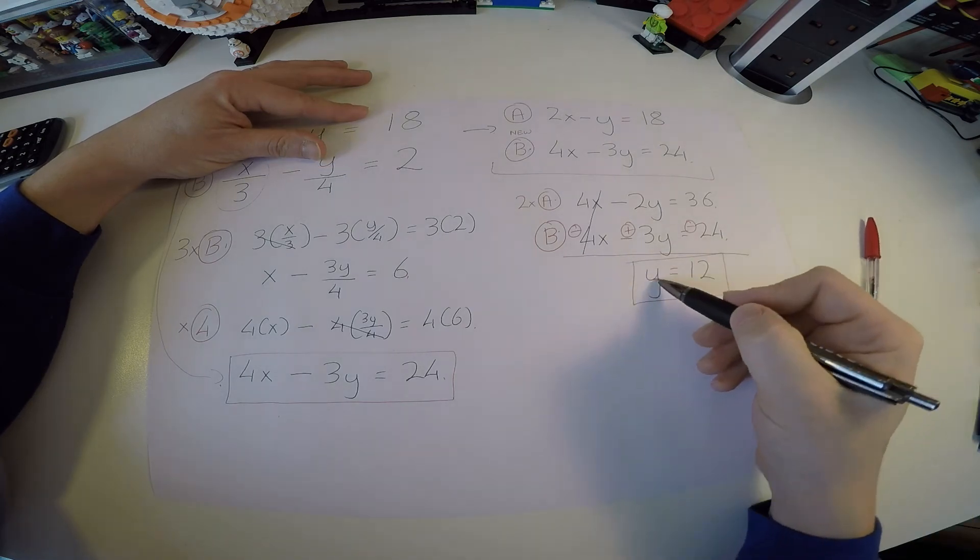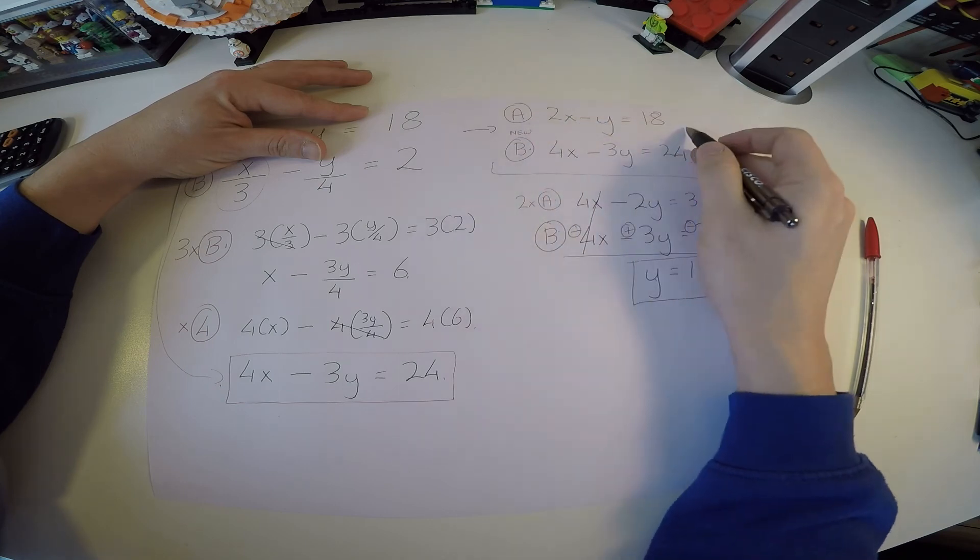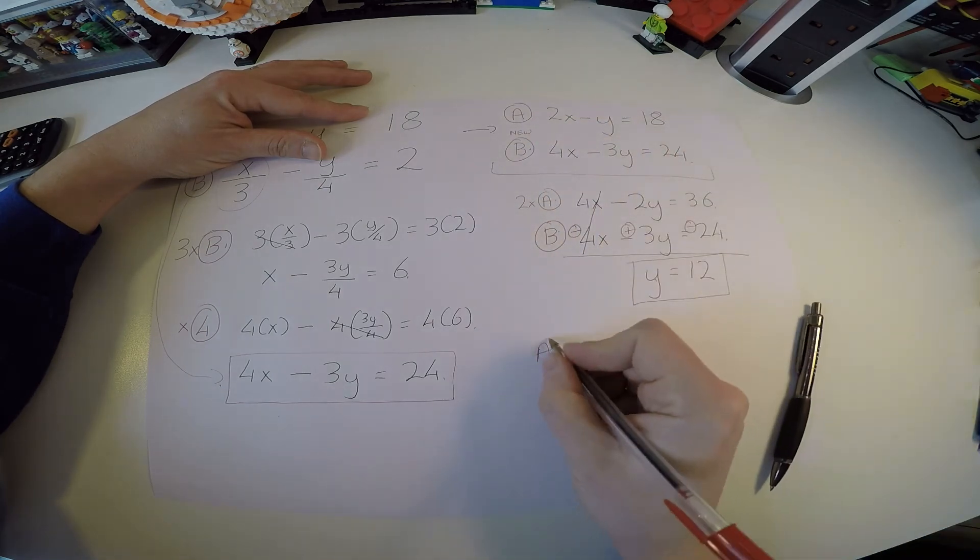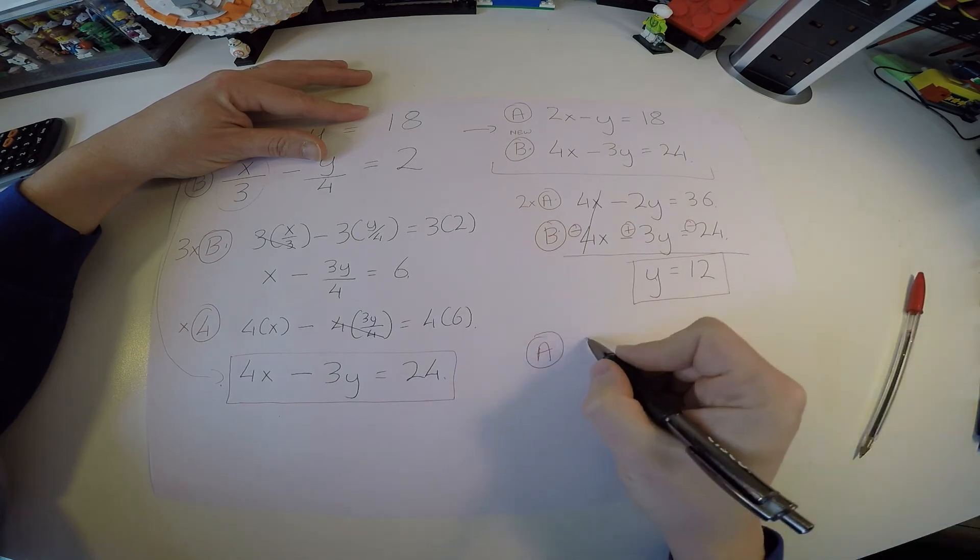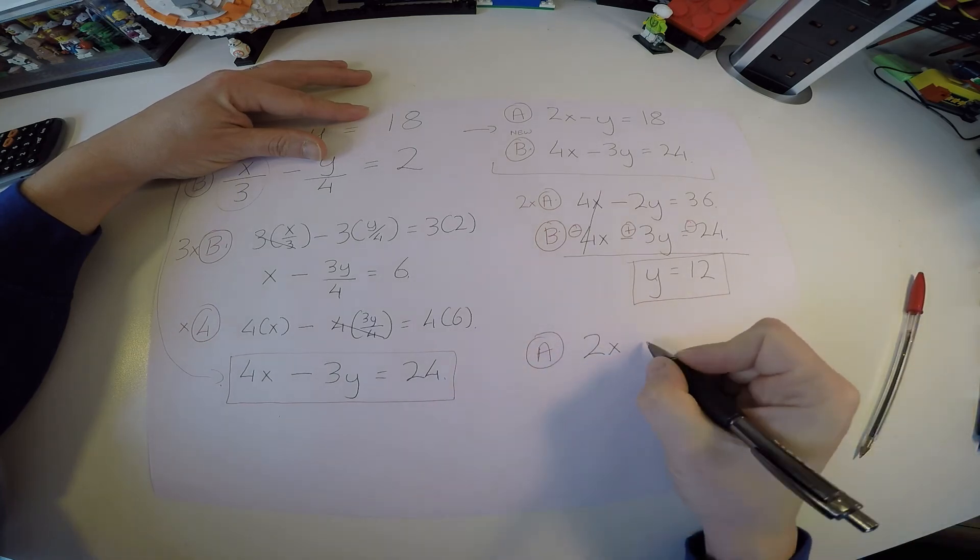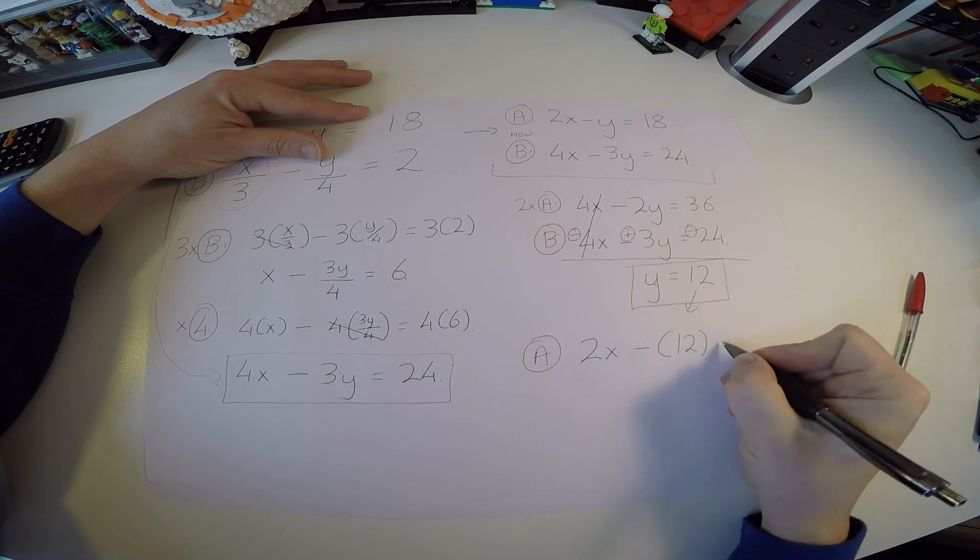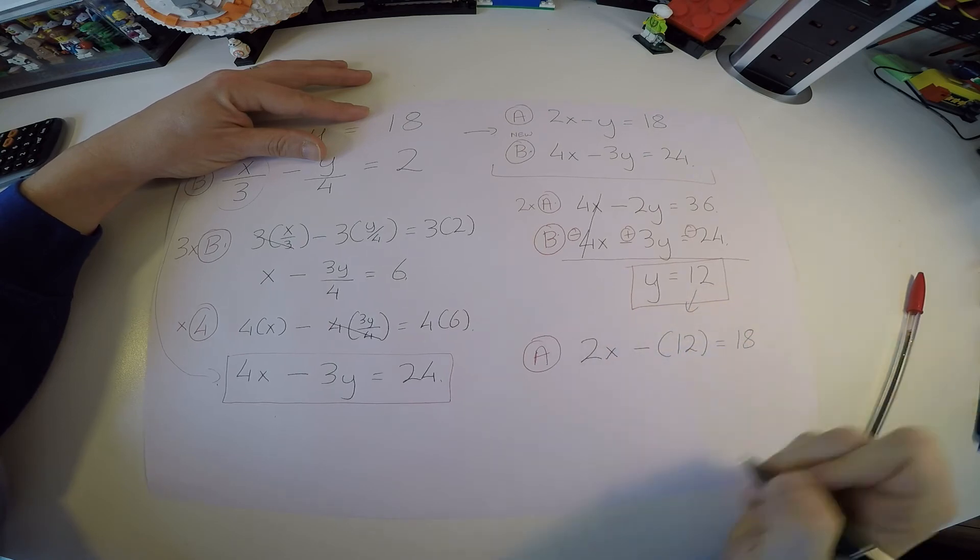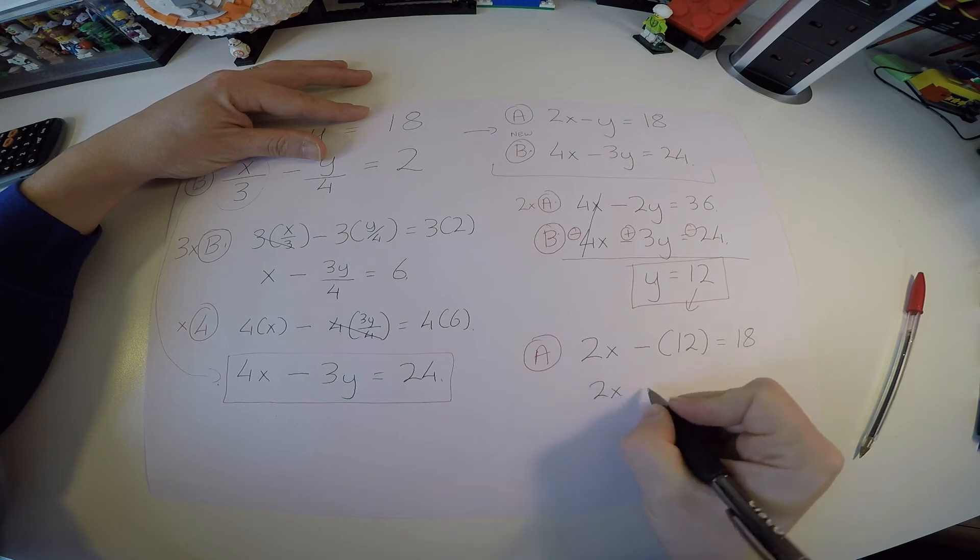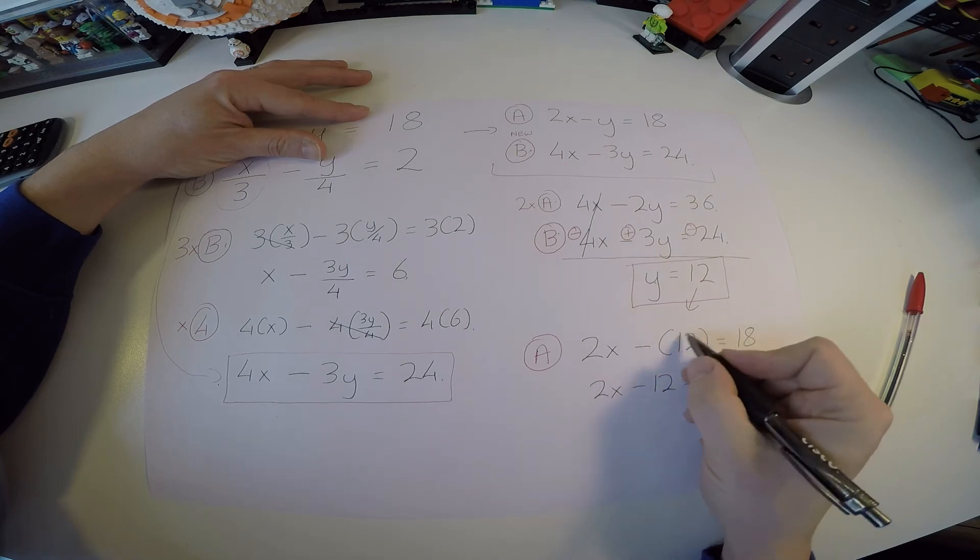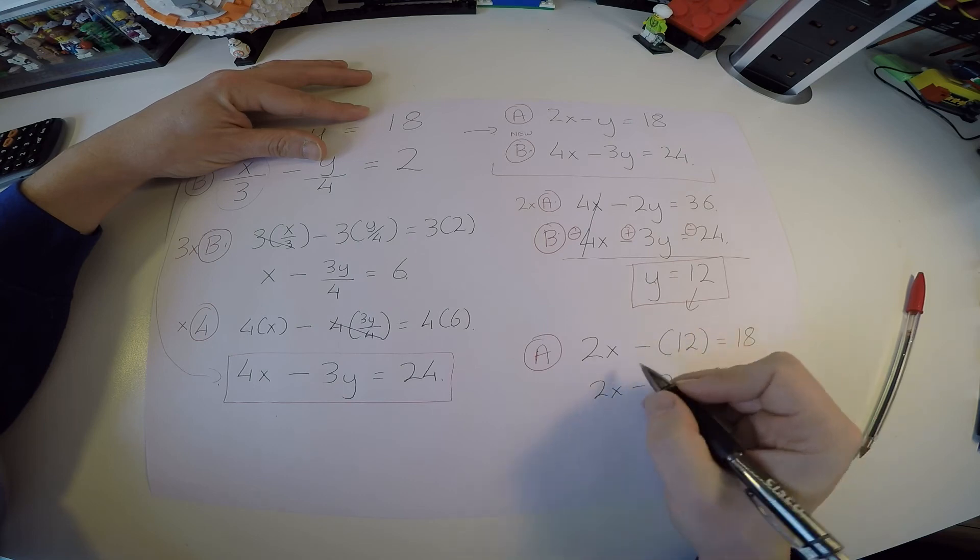What do I do with this y? I put it back into an original equation. Maybe a up here. So when I rewrite a, I'll rewrite them as this: 2 times x minus, now what's y? He comes in here as 12. Equals 18. That's 2x minus 12 equals 18. I always like to write when I sub in variables and brackets, just in case there's different signs, we don't make a mistake.